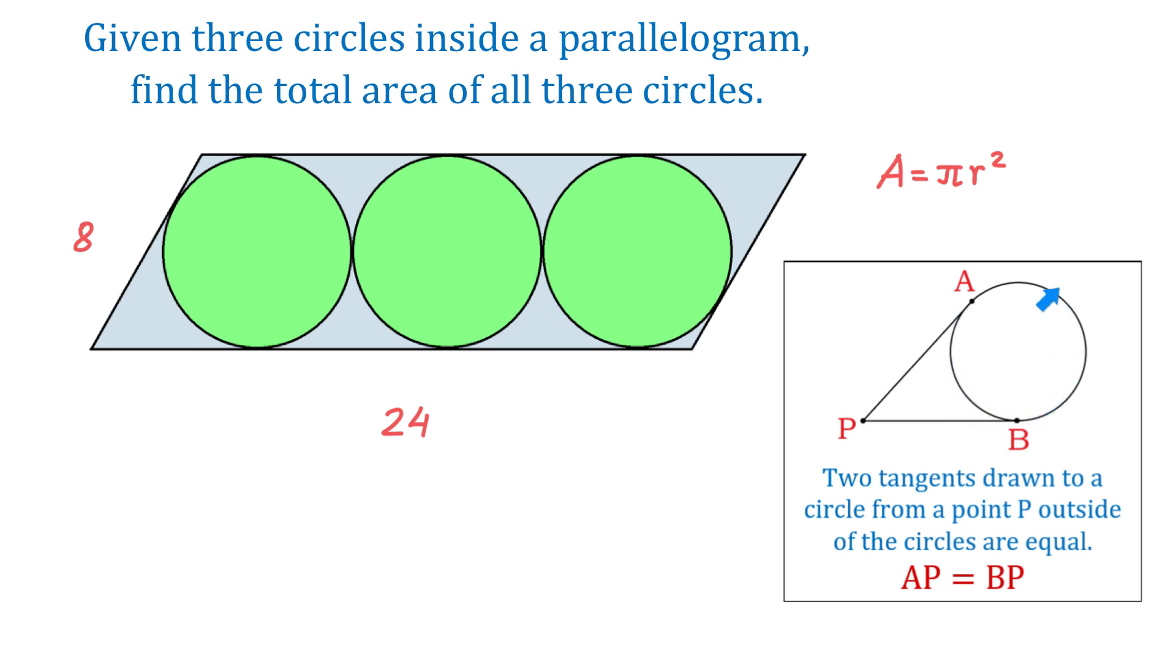If we have a circle and a point that is outside of the circle, then the two tangents to the circle will be equal.